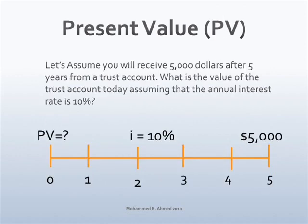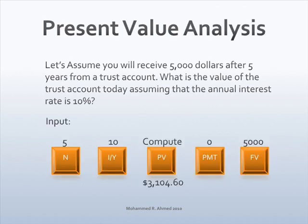Assume you will receive $5,000 after five years from a trust account. What is the value of the trust account today, assuming that the annual interest rate is 10%? Draw a timeline: time period is five years, money you will receive after five years is the future value, interest rate is 10%, and the question mark is on the left-hand side — it is a present value analysis. Enter into the calculator: 5 N, 10 I/Y, zero payment, $5,000 future value, then press compute and the present value key. The present value is $3,104.60.